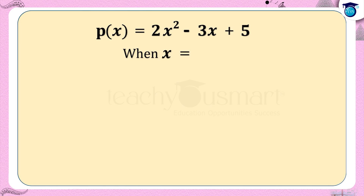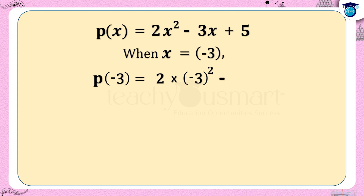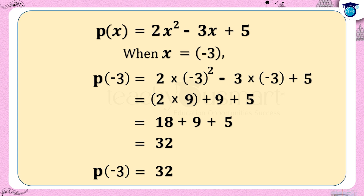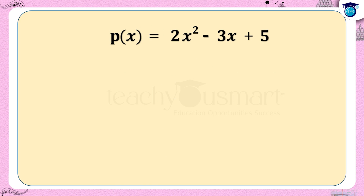When x equals minus 3, we get p(−3) = 2 multiplied by (−3)² minus 3 multiplied by (−3) plus 5, equals 2 multiplied by 9 plus 9 plus 5, equals 18 plus 9 plus 5, equals 32. That is p(−3) = 32. Here 32 is the value of the polynomial at x equals minus 3. If we give different values for x, we get the corresponding value of the polynomial.